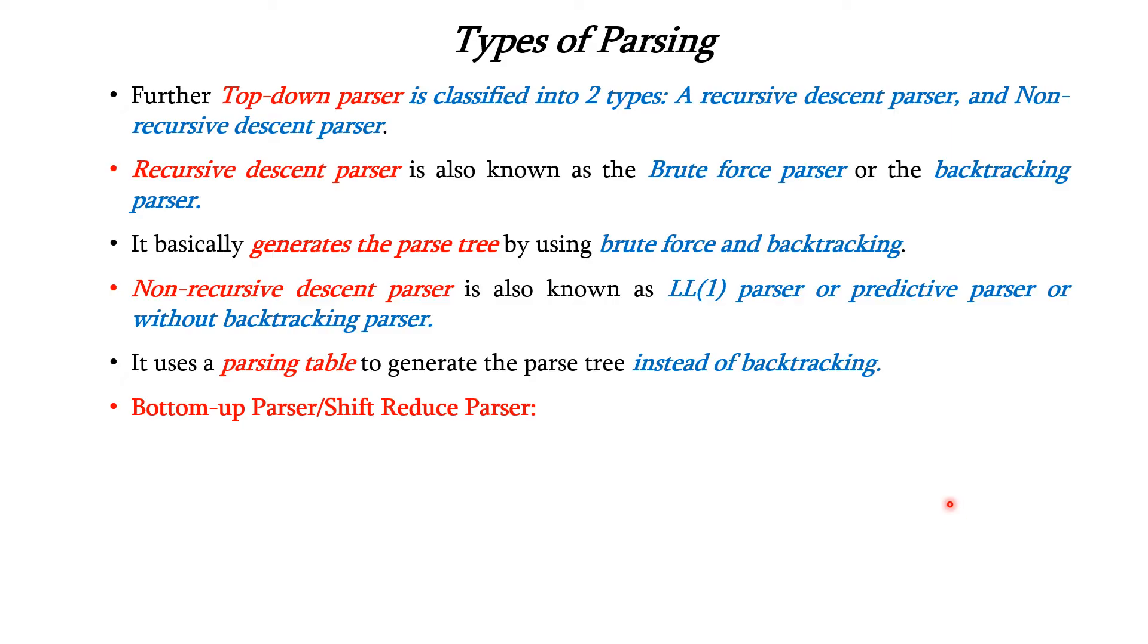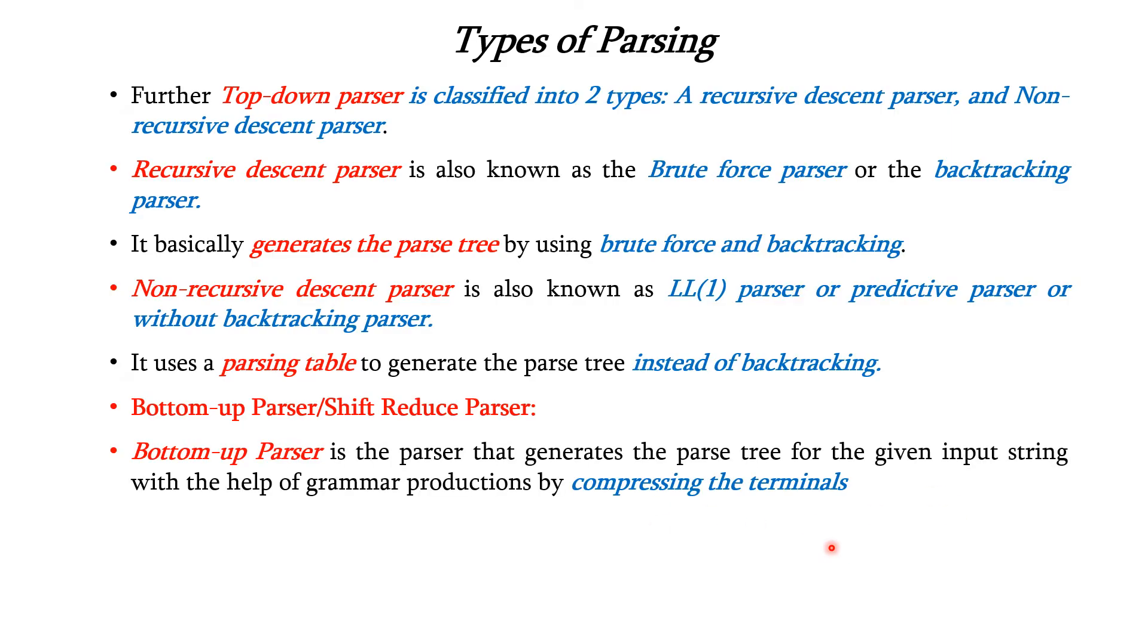Bottom-up parser is also called shift reduce parser. It generates the parse tree for the given input string with the help of grammar productions by compressing the terminals. That is, it will start from the terminals and end on the start symbol. It uses the reverse of the right-most derivation.